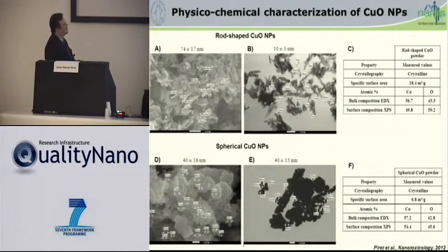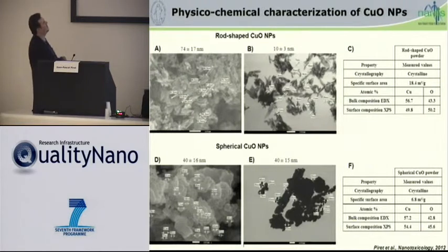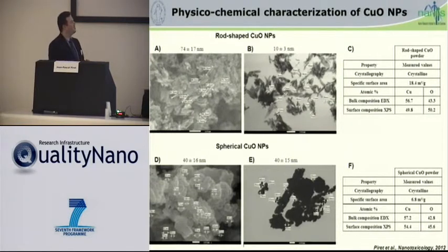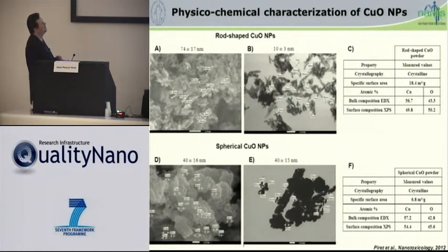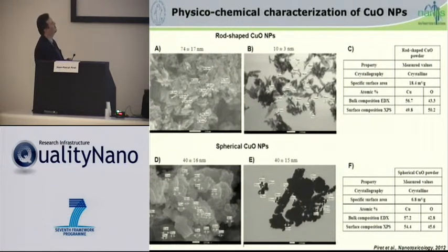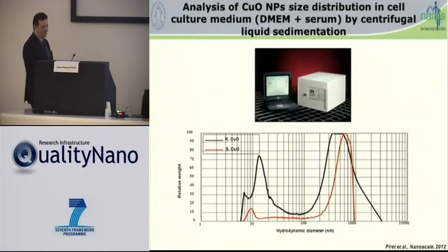The first nanoparticle has a rod shape with a length of approximately 70 nanometers. The second one has a spherical shape with approximately 40 nanometers in diameter. If you take a look at these two tables, you will see the chemical composition of both nanoparticles. You will see that we detect only copper and oxygen, and the chemical composition is very similar between the two types.